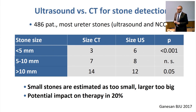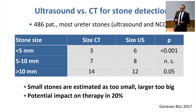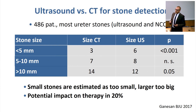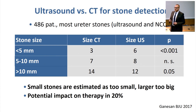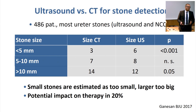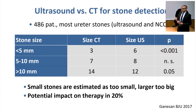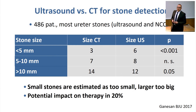As you see here in this study published last year, the small stones are estimated too small and the largest too big with ultrasound. That is important because if we talk about conservative management versus intervention for ureteral stones, we often discuss about the size, and it's often around 5 millimeters where we think we should either go for intervention or for conservative observation. So it's important that we know the size of the stone.